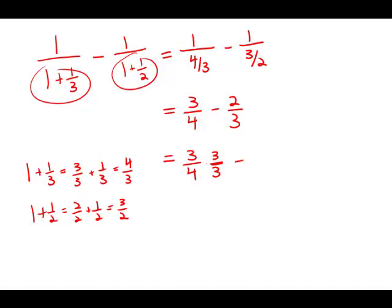Similarly, 2/3—I'm going to multiply this by 4 over 4. And so what happens is I get 9 over 12 minus 8 over 12, equals 1 over 12. And this is answer choice D.